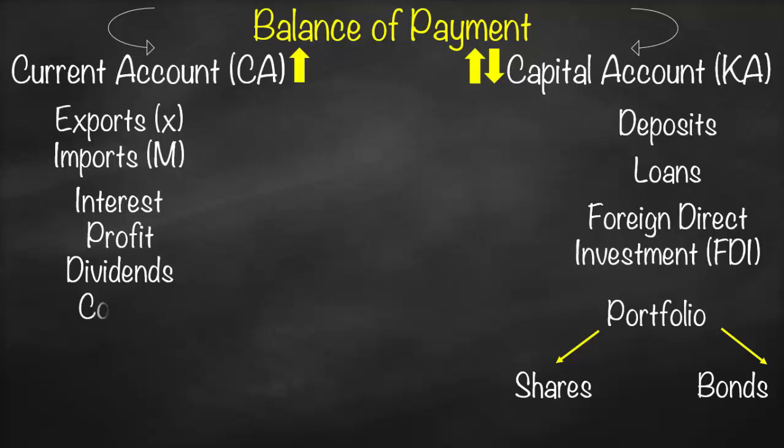If you work overseas as an economic or financial consultant for an international company and they pay your salary or wage, that income is one-way — you're not going to repay it back — so it is reported under current account.